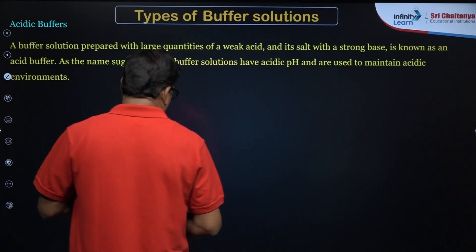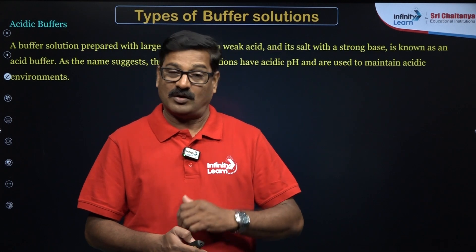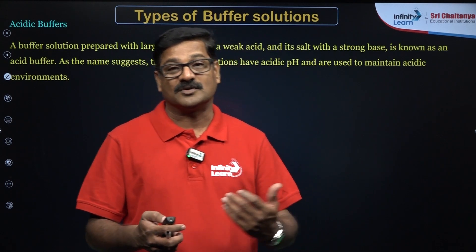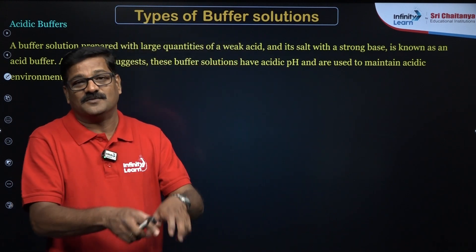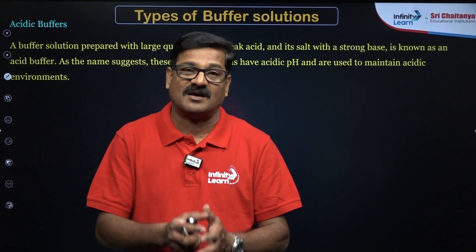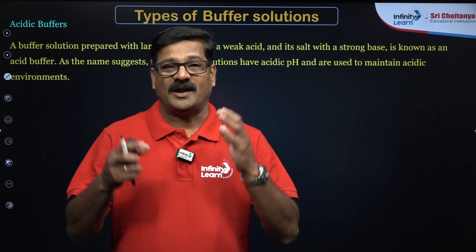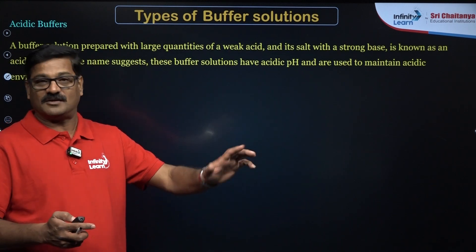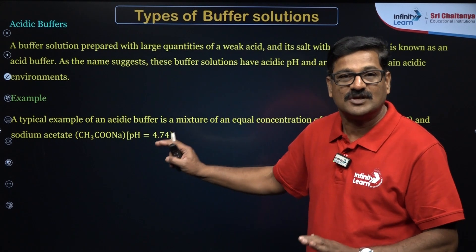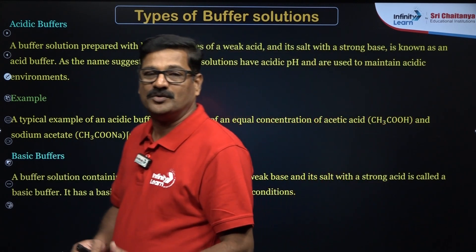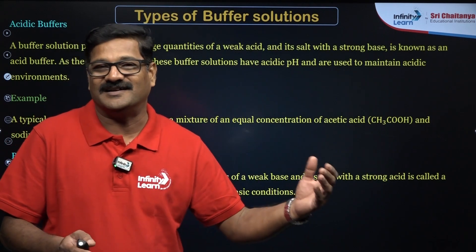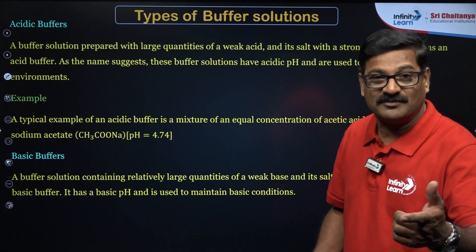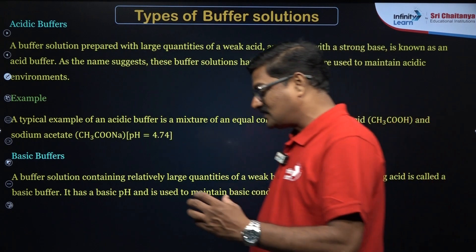Types of buffers: you have simple buffers or mixed buffers. Simple buffers are salts of a weak acid and a weak base, like ammonium carbonate. For the NEET examination, more emphasis is placed on mixed buffers. Mixed buffers are of two types: acidic buffer and basic buffer. An acidic buffer is prepared by mixing a weak acid and its salt with a strong base — like acetic acid mixed with sodium acetate. A basic buffer is a mixture of a weak base and its salt with a strong acid, like ammonium hydroxide and ammonium chloride.